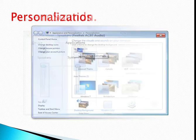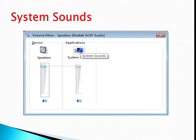Now, system sounds. First, you have to find the speaker icon to change your system sound. It is located on the right side of the taskbar. Click once, then you can drag the slider up or down to change the sound volume.